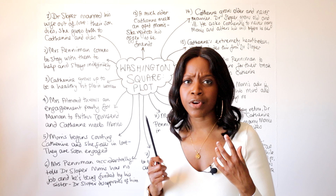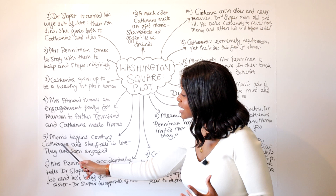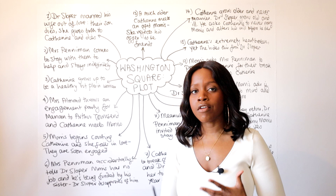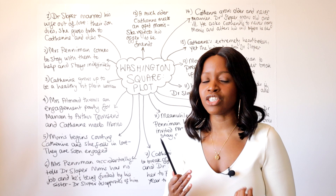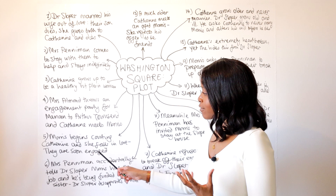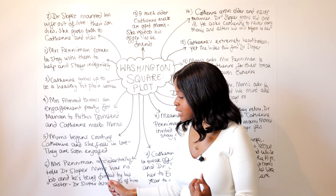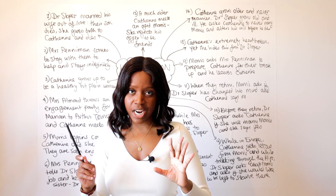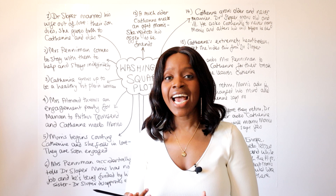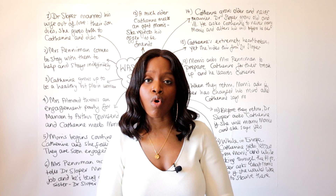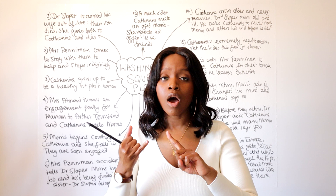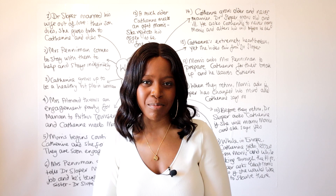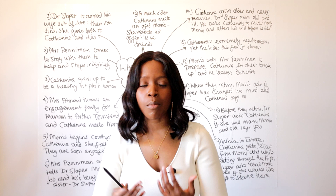Morris is very handsome, very charming, and very easy to get along with. He seemingly falls in love with Katherine and begins courting her, visiting her and Mrs. Peniman every day at the Sloper residence. Katherine, who has never received such positive attention from a handsome man, really falls in love with this. She ends up falling for Morris, Morris proposes, and they are soon engaged.